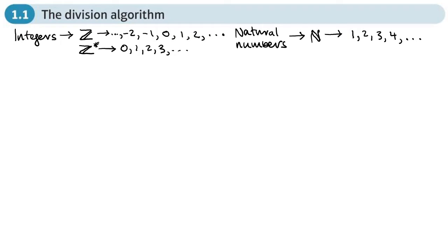Natural numbers always start from one, so they're always positive. To summarise: integers are positive and negative whole numbers; integers with a star or plus sign means positive whole numbers; and natural numbers are the counting numbers starting from one. Now, since this section is all about division, let's look at how we can show that one number divides another.